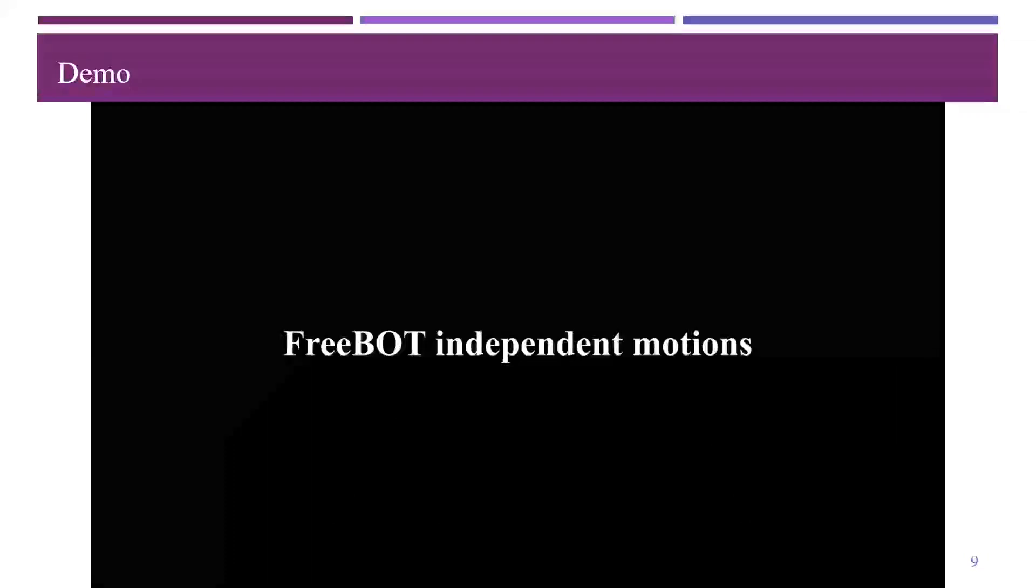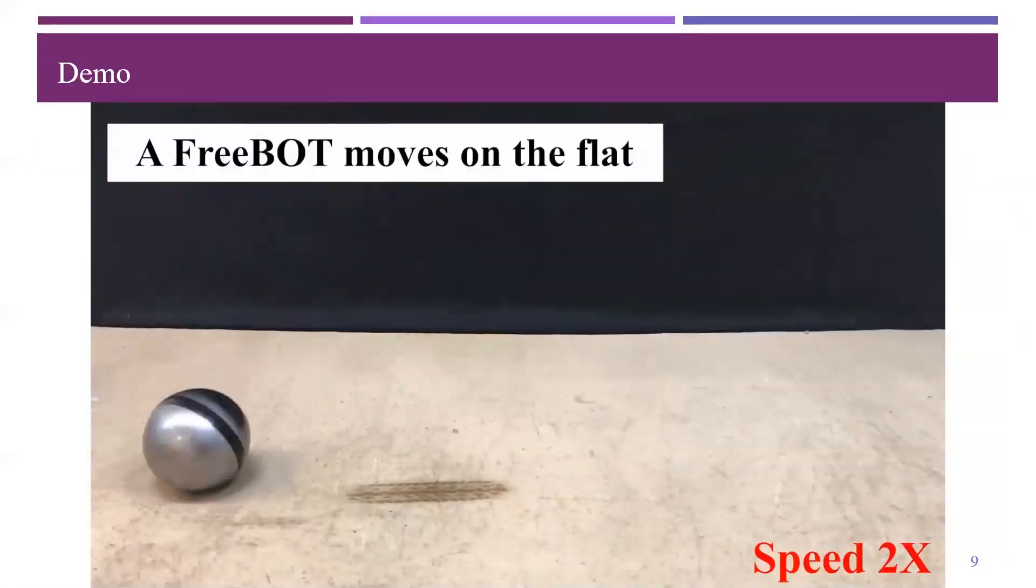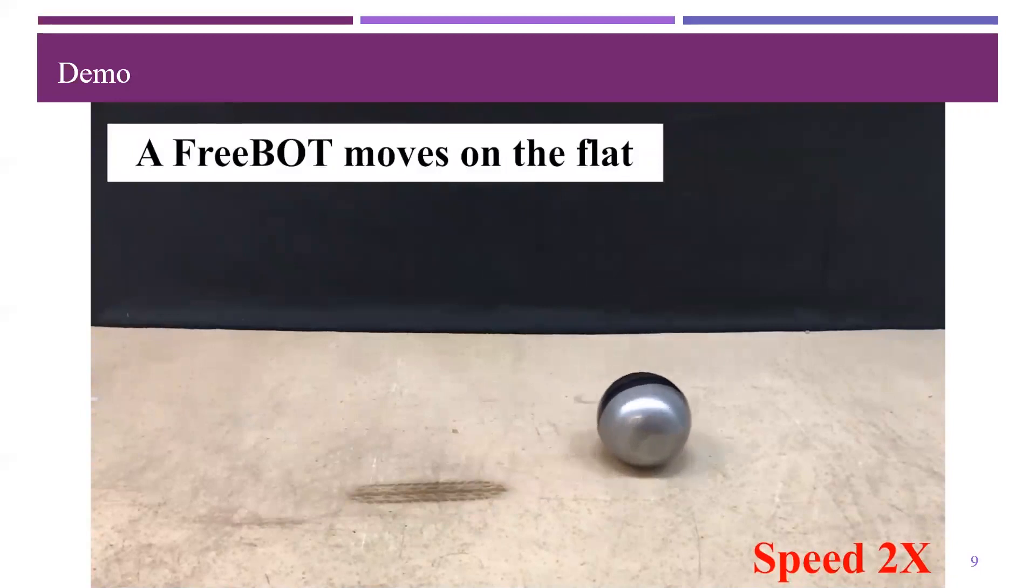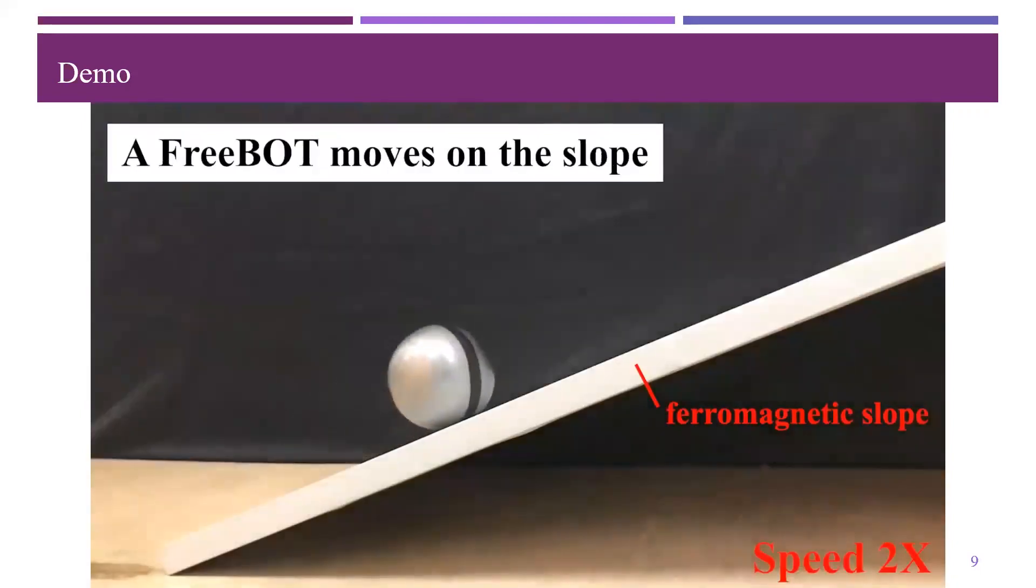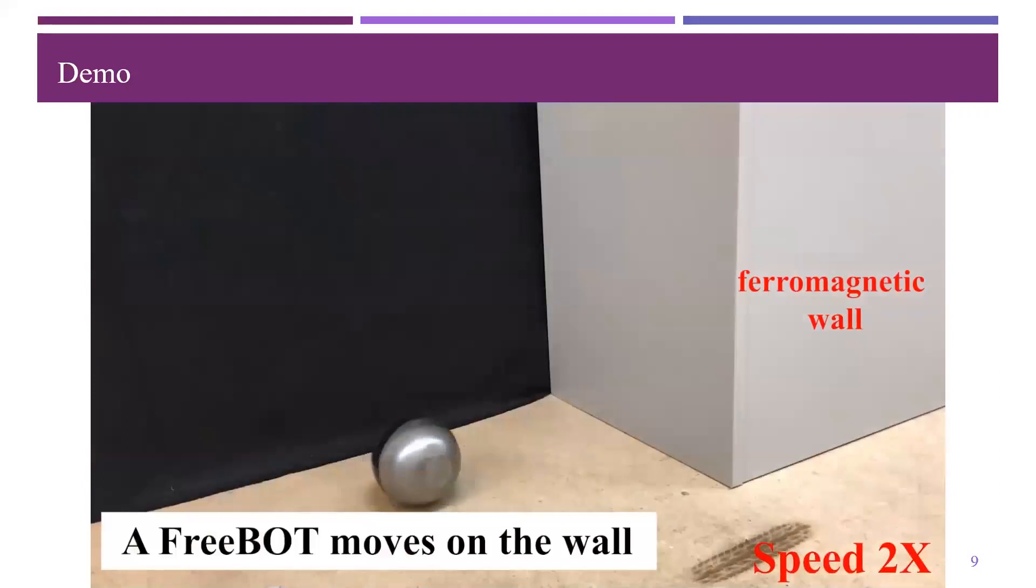FreeBot shows some interesting motion performance. When it comes to individual movement, a FreeBot can move independently on flat ground. FreeBot can climb a ferromagnetic slope. Can climb up vertical walls.